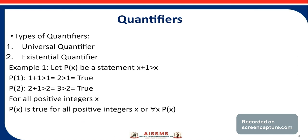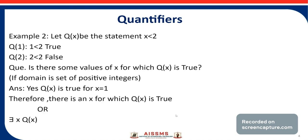Now consider example two: let q(x) be the statement 'x is less than 2'. For x = 1: 1 < 2 — true. For x = 2: 2 < 2 — false.